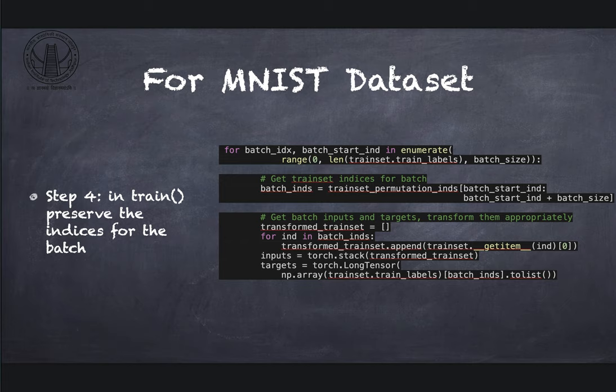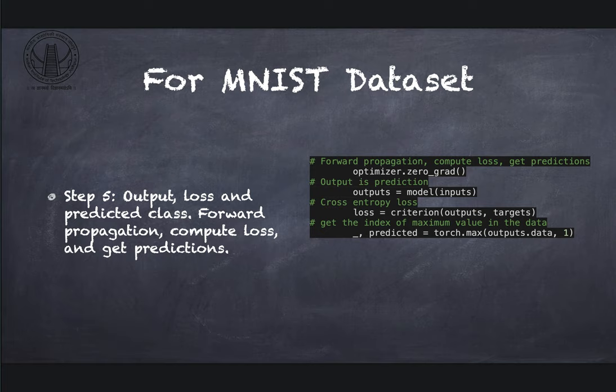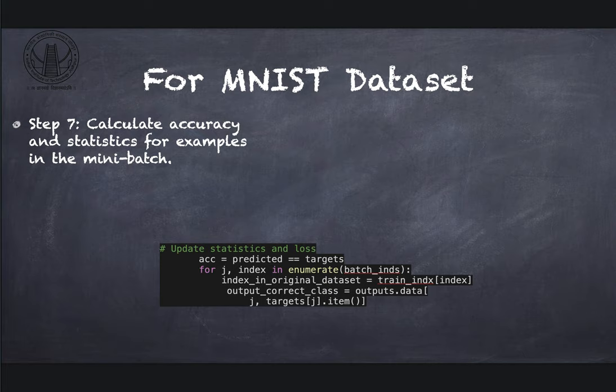Then once done do the forward pass and compute the losses. Also get predicted labels. Cross entropy loss is used here and the code gets the index of the maximum in the data which is a tensor, that is get the index of the maximum value in the data.